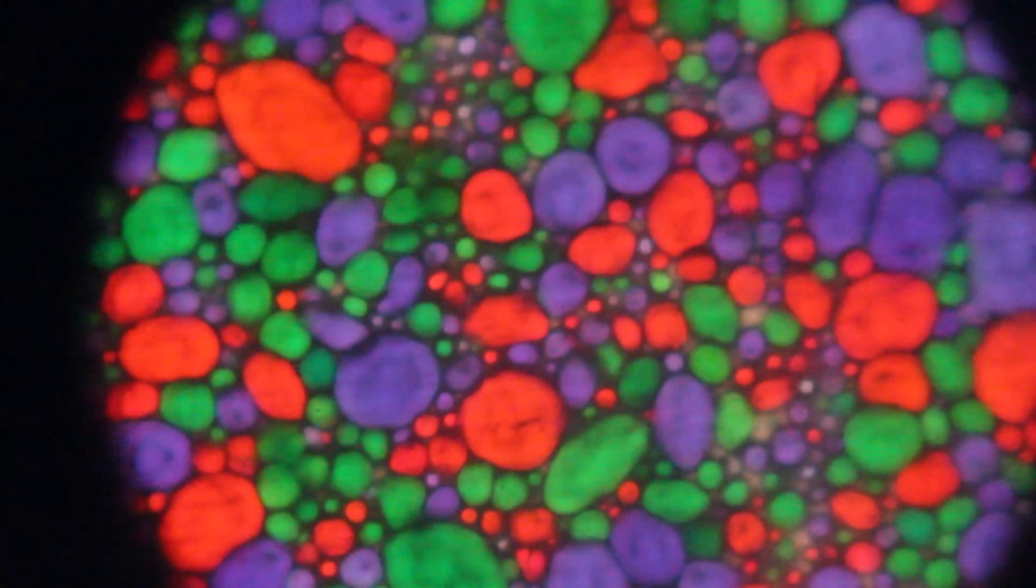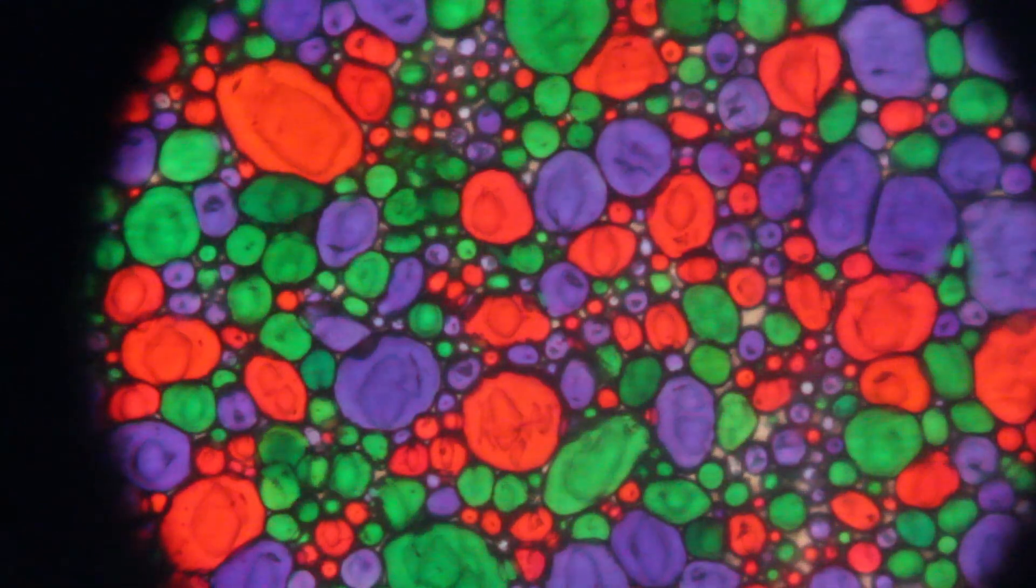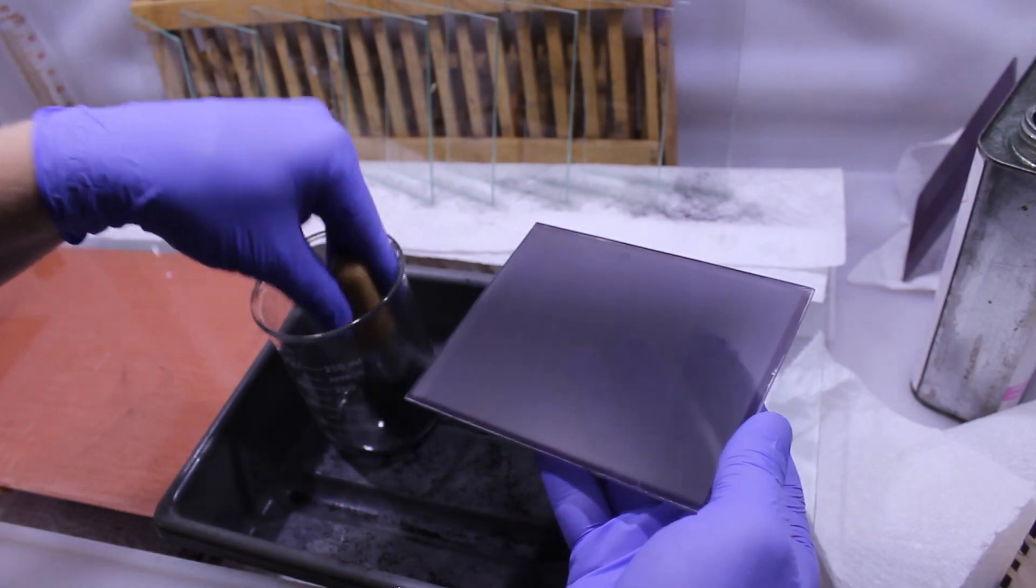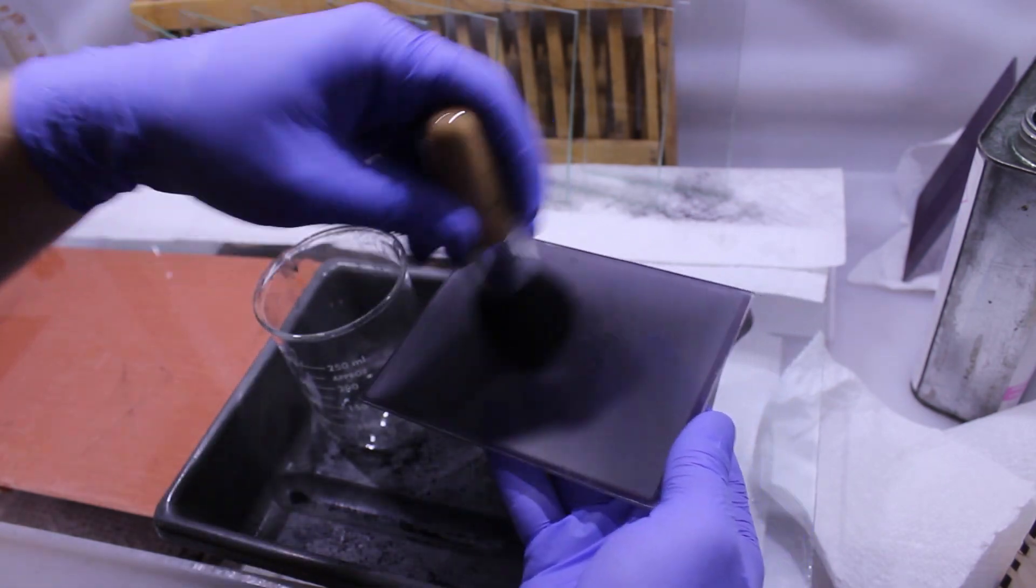Even though we've considerably reduced our interstitial spaces between the grains, we still have some that need to be filled in. For this, we use a little bit of lamp black. I dab a little bit onto the brush and brush it around.